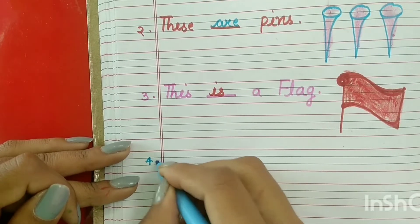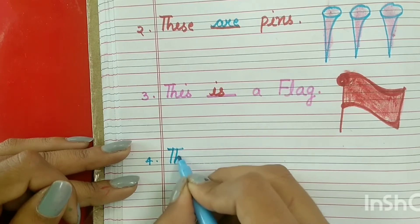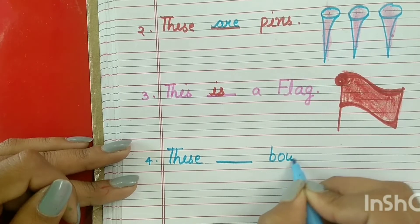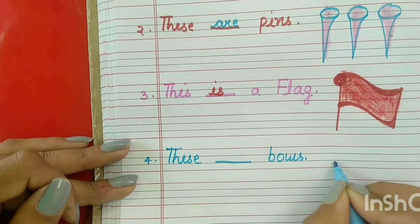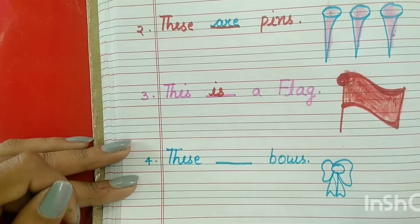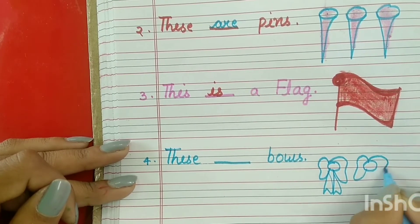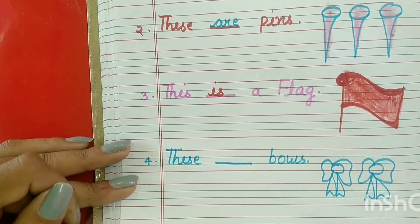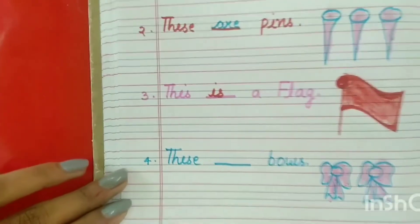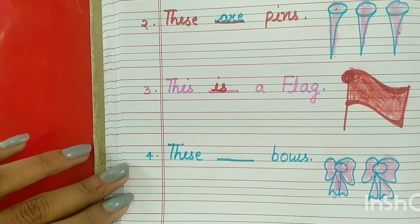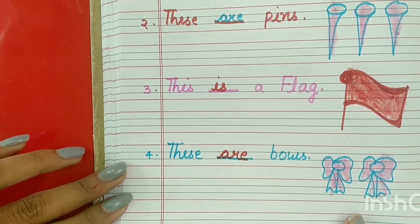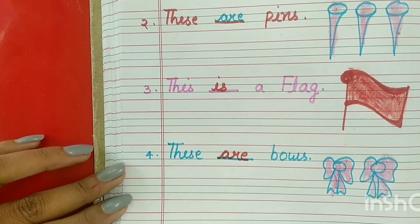Make point number four and write: 'these' dash bows. So we will make bows now — one, two. Fill the color also. What will come here? These are bows. Because there is more than one bow.